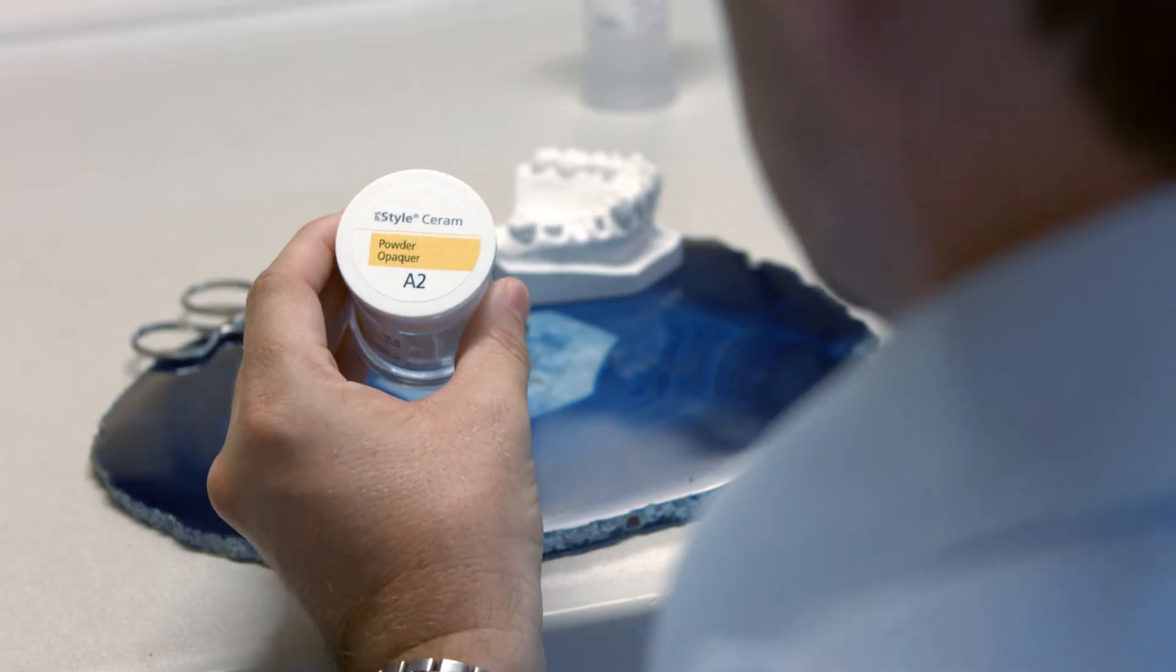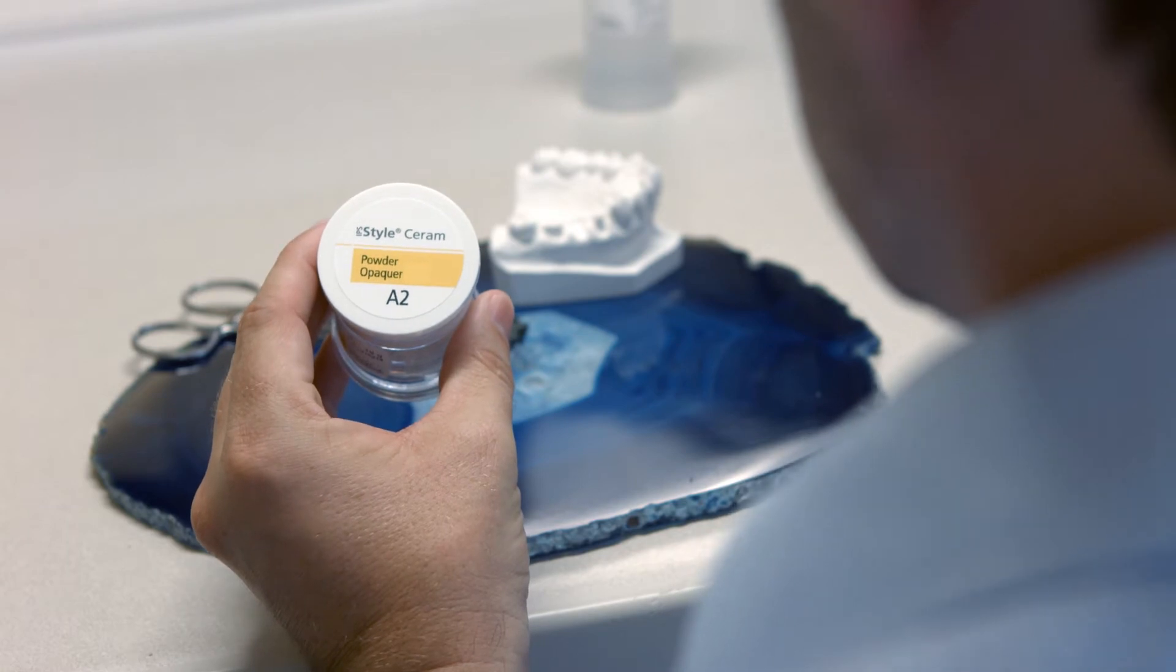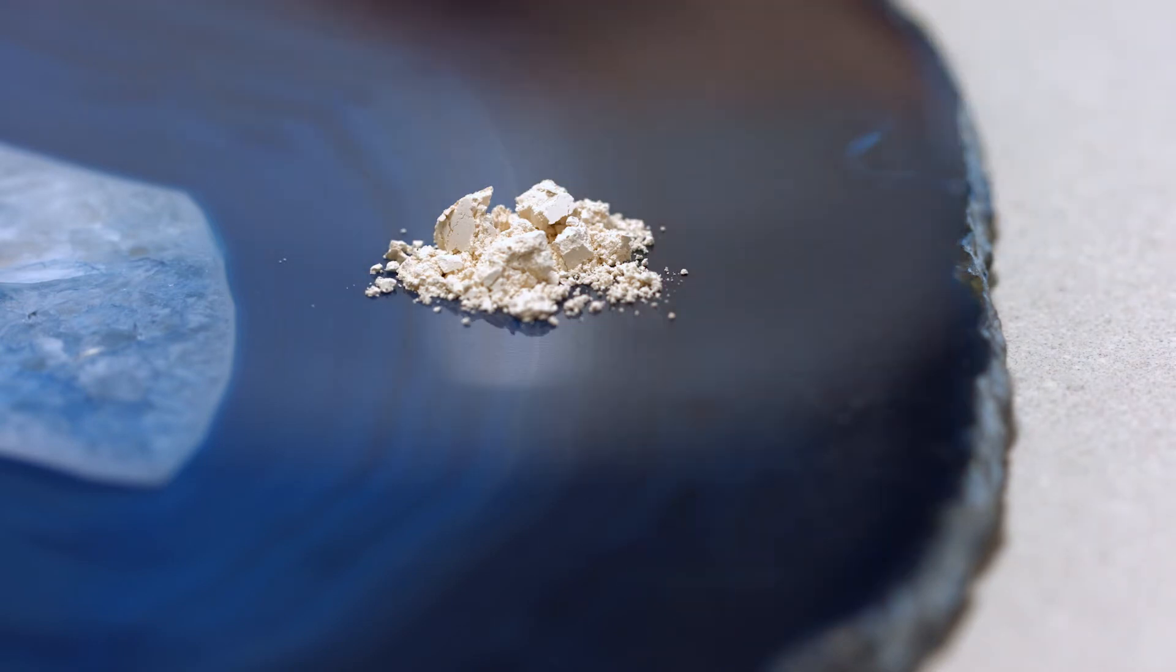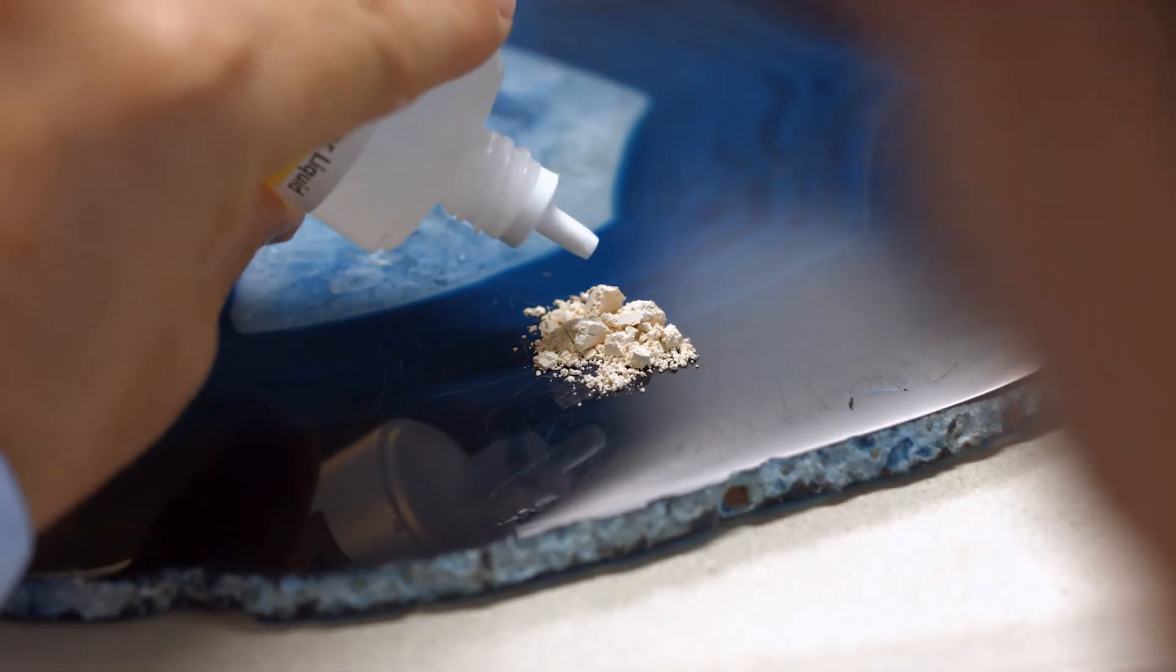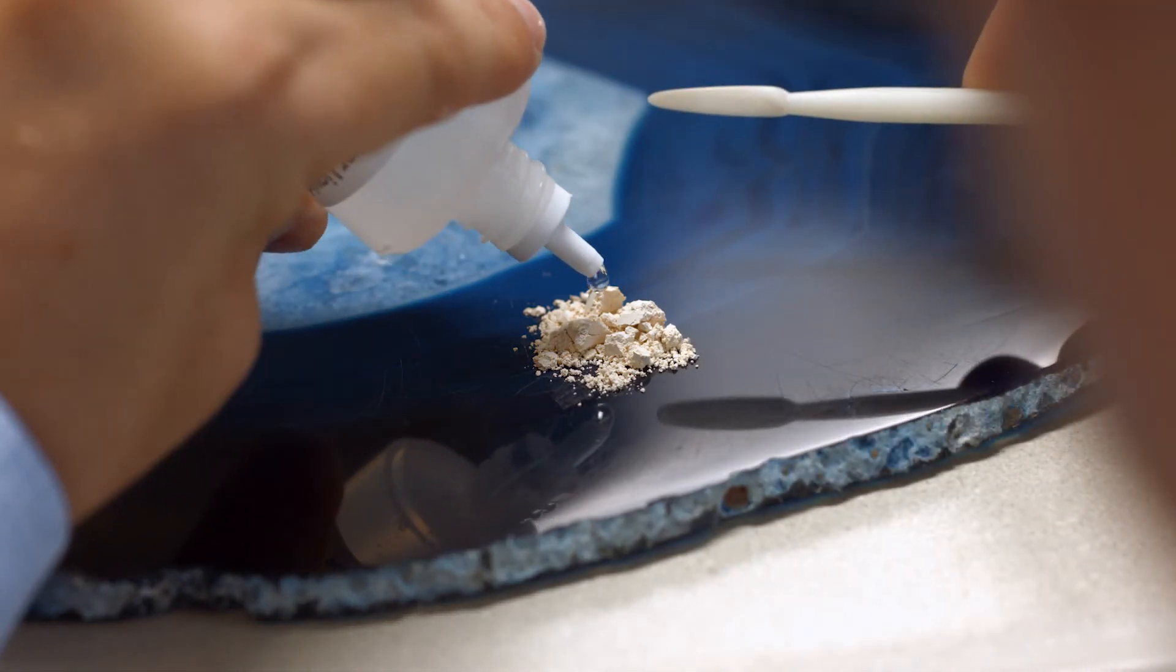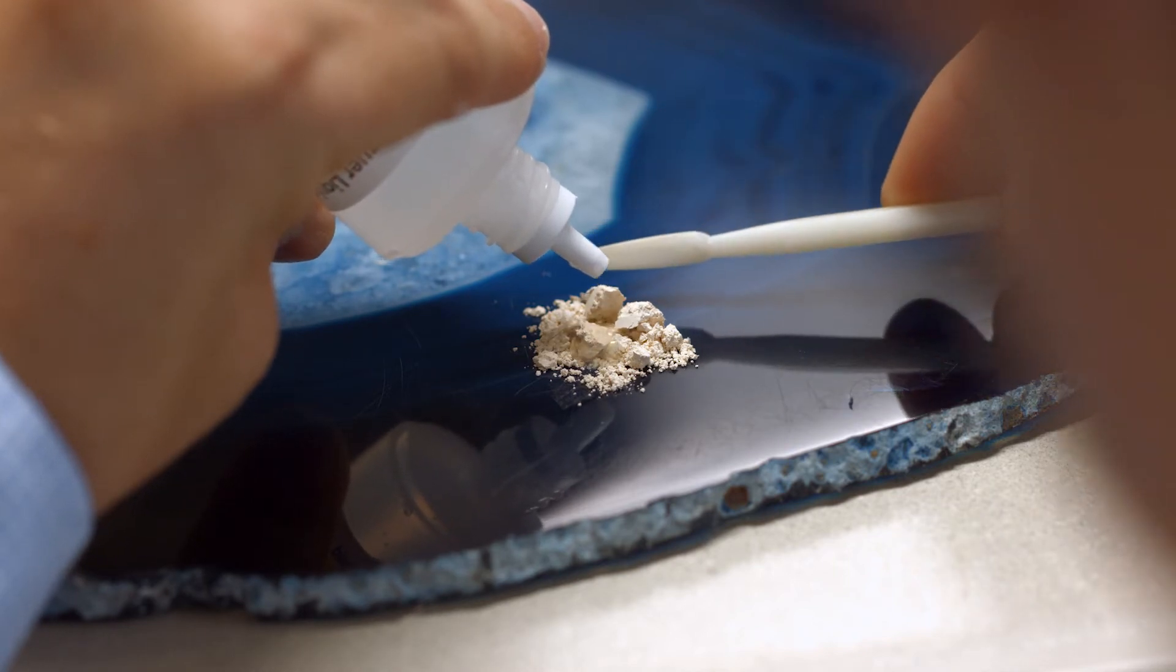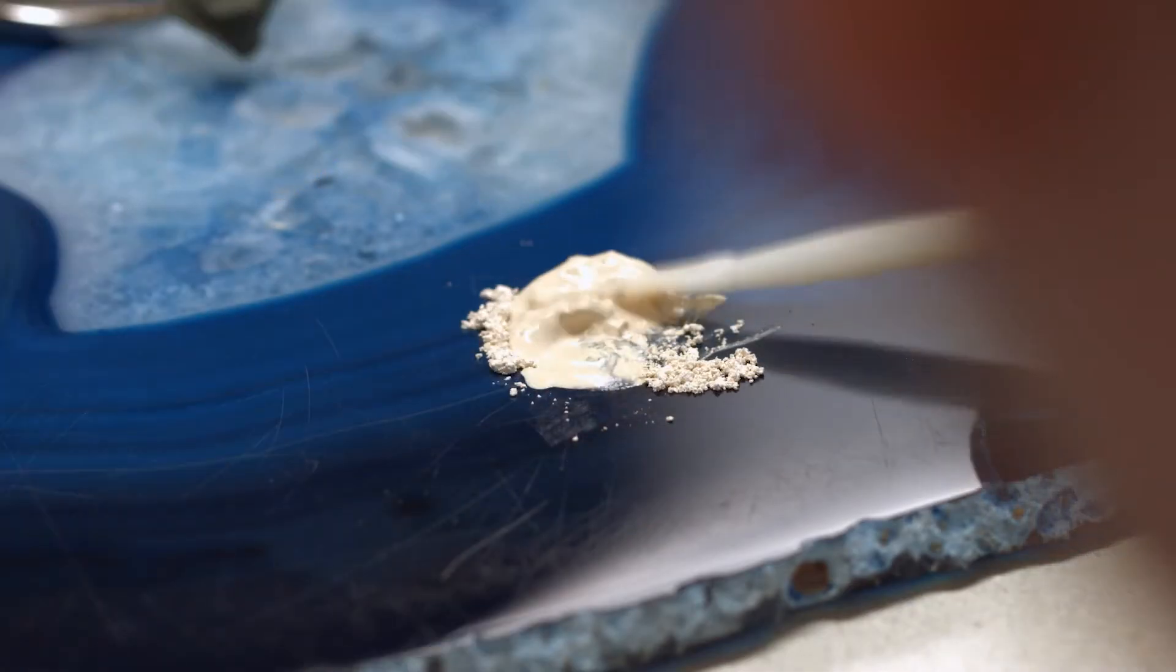Prepare the metal framework for the veneering procedure with IPS Style Ceram 1 by first applying and firing the opaquer. Mix the amount of opaquer powder required for the first layer with the IPS Powder Opaquer Liquid to achieve the desired consistency.